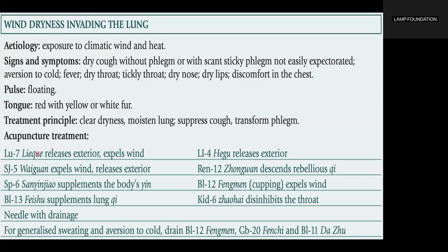Acupuncture treatment: we use Lung 7 to release exterior and expel wind; Sanjiao 5 to expel wind and release exterior; Spleen 6 to supplement the body's yin; Bladder 13 to supplement lung chi; LI 4 to release exterior; Ren 12 to descend rebellious chi; Bladder 12 using cupping to expel wind; and Kidney 6 to disinhibit the throat. We needle with drainage. For generalized sweating and aversion to cold, we drain Bladder 12, Gallbladder 20, and Bladder 11.